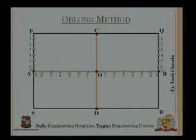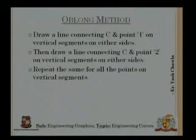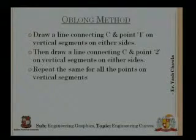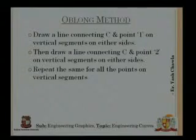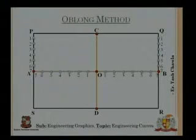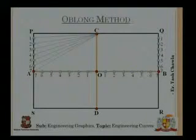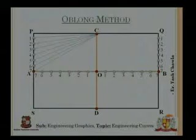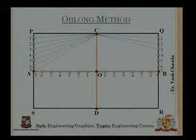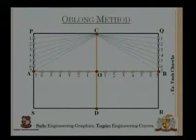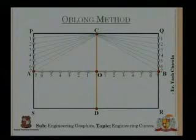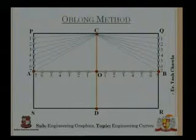Now what I am going to do is join points 1, 2, 3, 4, 5, 6, and 7 to C on either side of the minor axis. From C I draw a line to 1, then 2, then 3, then 4, then 5, then 6, then 7. I do the same on the right-hand side. So now I have reference lines C1, C2, C3, C4, C5, C6, C7 on both sides of the minor axis.